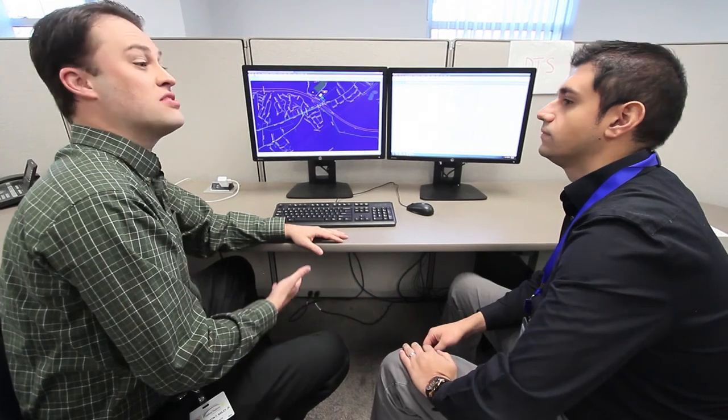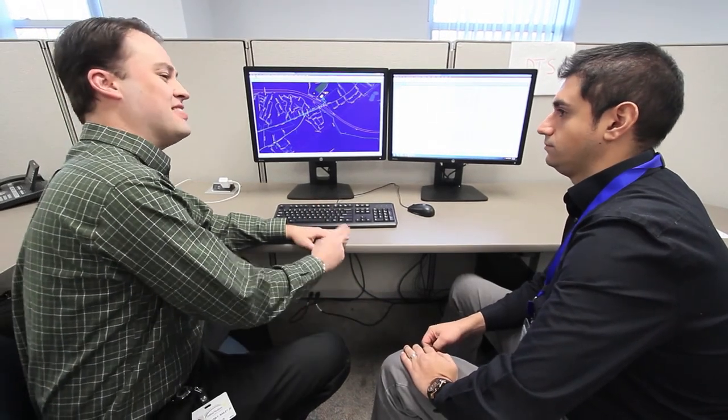So we'll see things like status of a recloser—is it open, is it closed. We'll be able to use an application called FLIZR, which is Fault Location, Isolation, and Service Restoration.